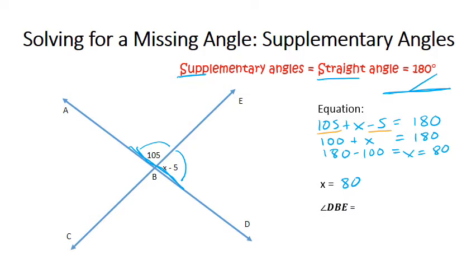So in this case, I've been asked to find angle DBE, this angle right here. And so I'm looking for x minus 5. In this case, I'm going to take 80 and subtract 5, which would give me 75.